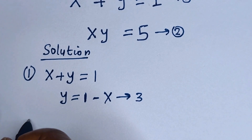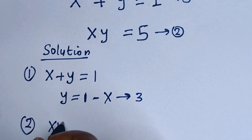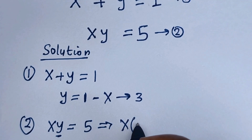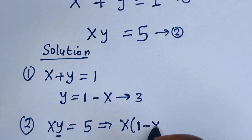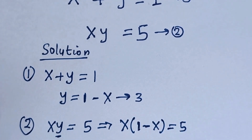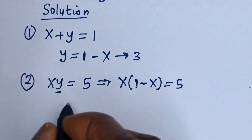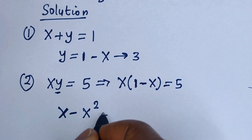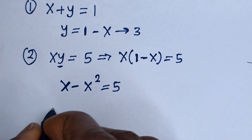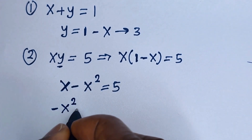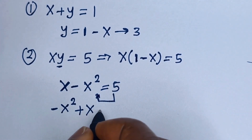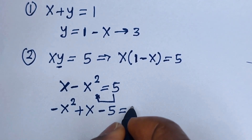Now from equation 2, S times Y is equal to 5. Then let's substitute for Y. S times bracket (1 minus S) is equal to 5. Let us open the bracket: S multiplied by 1 is S, minus S squared, is equal to 5. And this gives us negative S squared plus S.